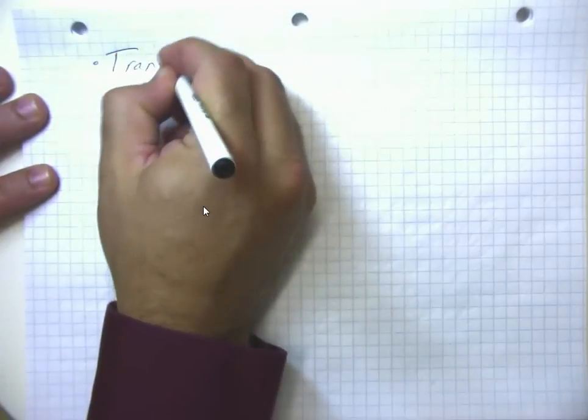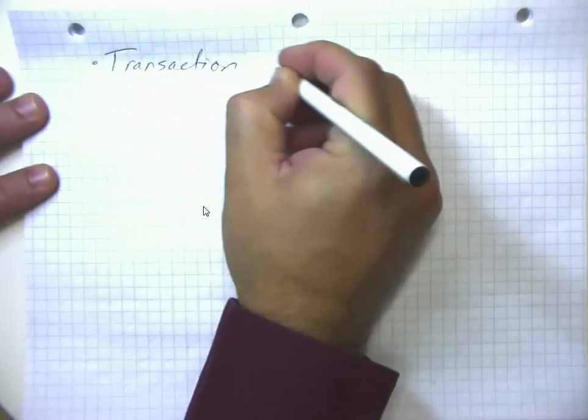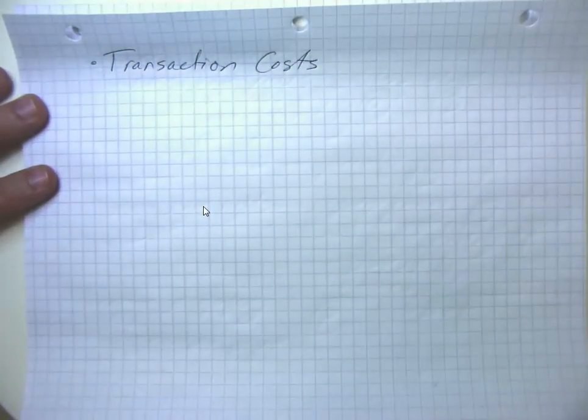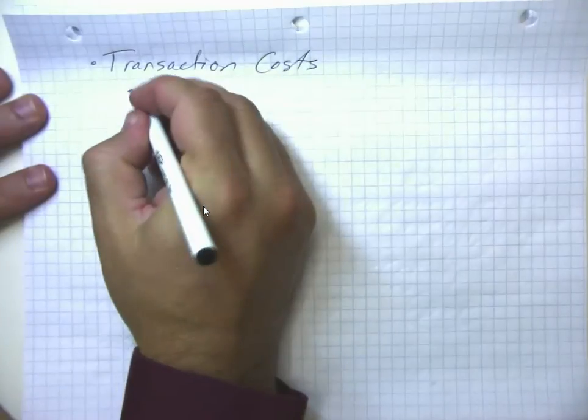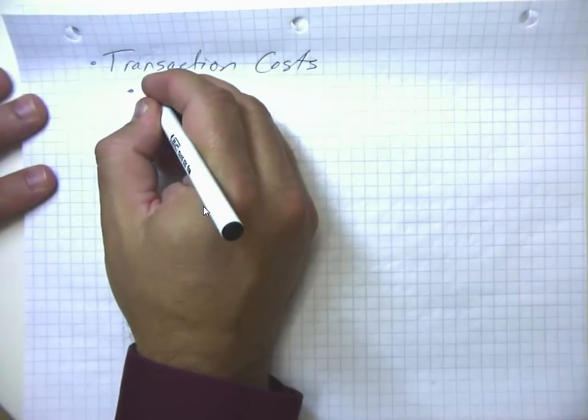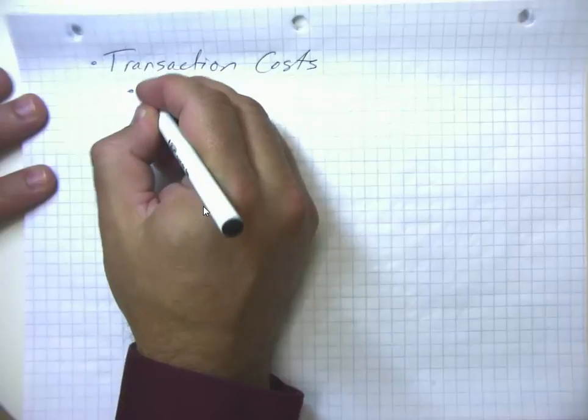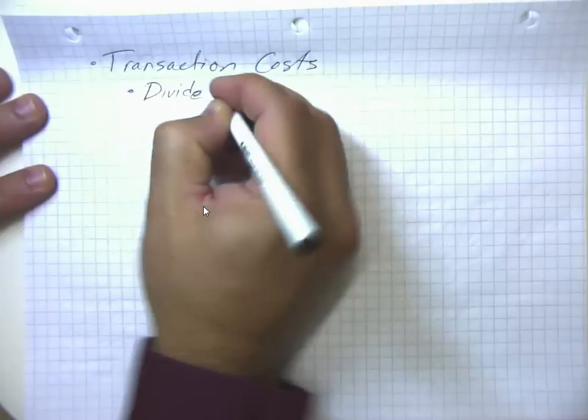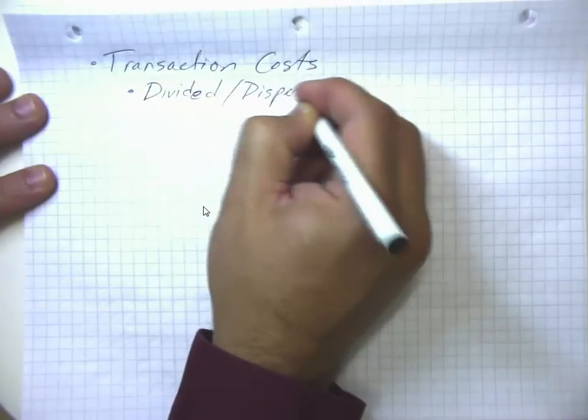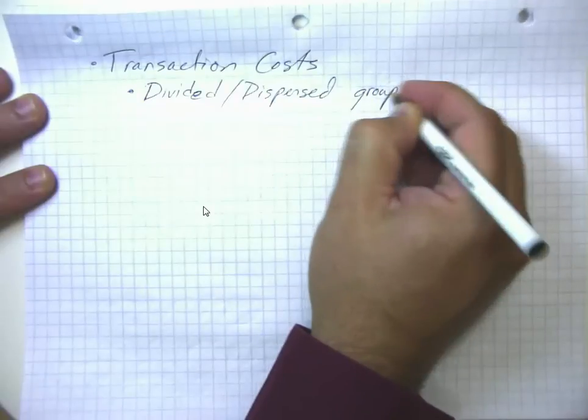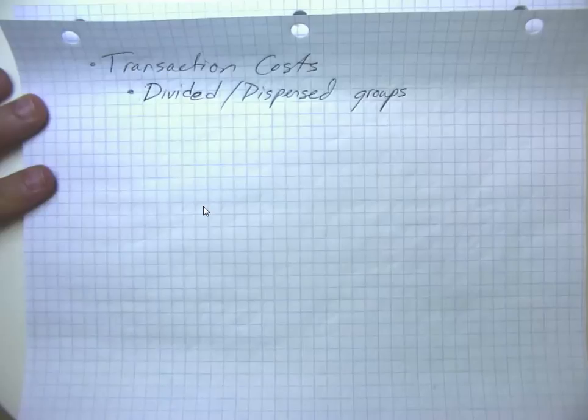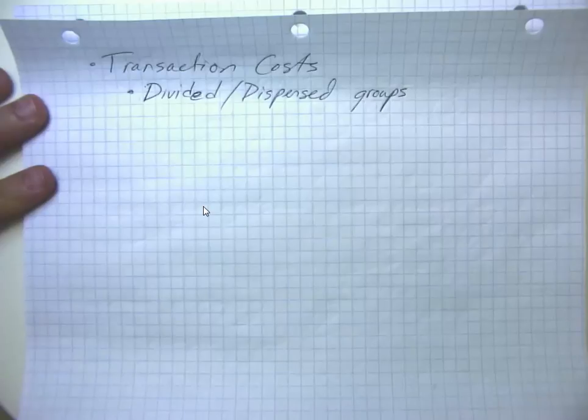Almost all of these can be lumped under the idea of what we call transactions costs. So in particular, in my last example, I assumed that we had two monolithic groups. But in fact, we may have divided or dispersed groups. And that may make it tough to get all the fishermen on the same page.